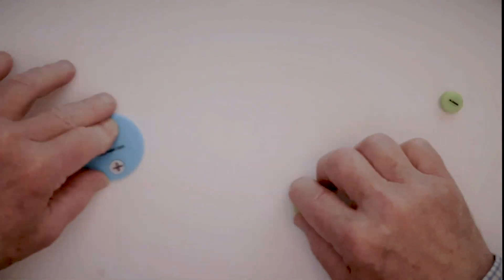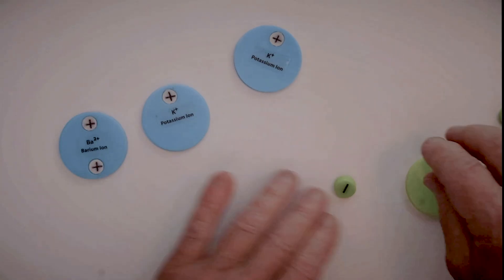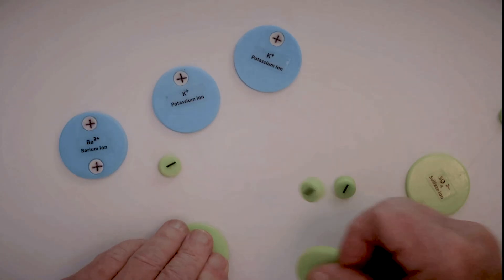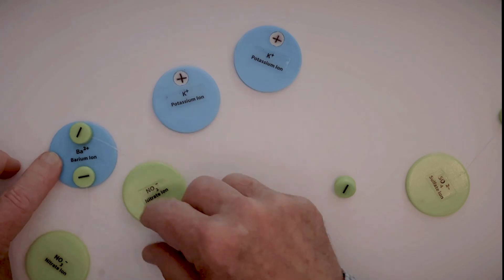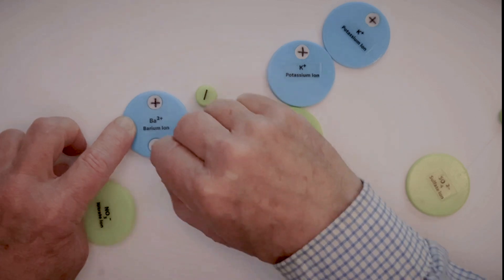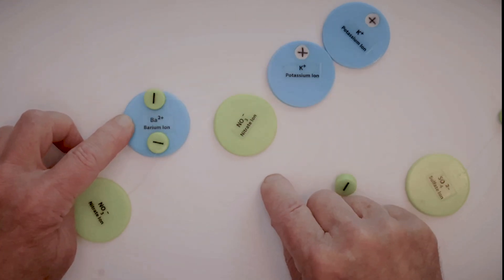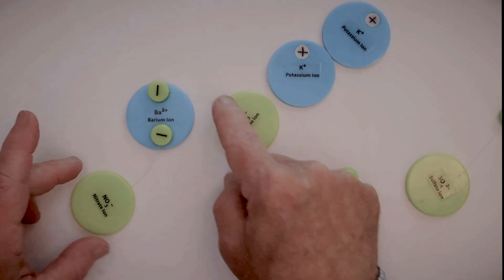So now, if we have potassium and nitrate ions, and if we have these nitrates hooked onto the barium, look at that. We've got, yeah, there's two pluses and two minuses. Boom! Now, it's balanced. It adds up to zero.